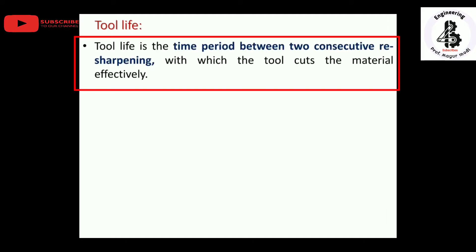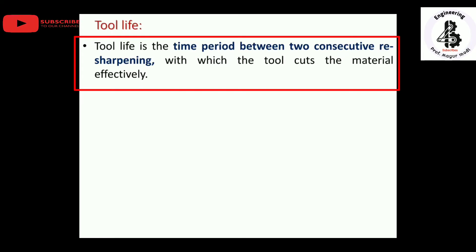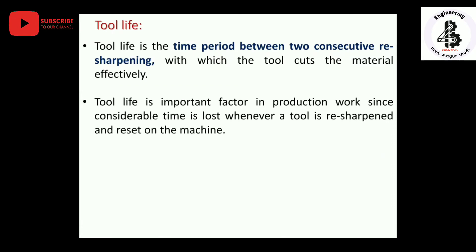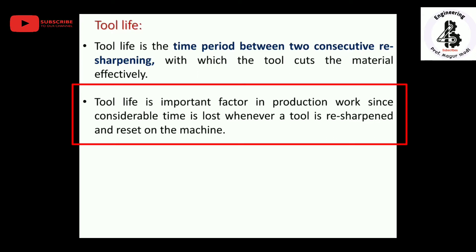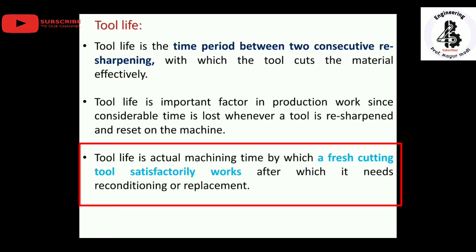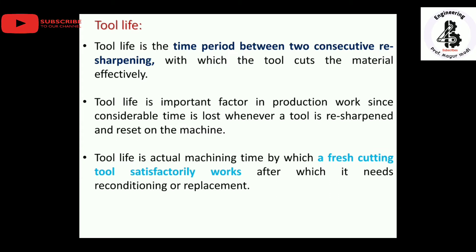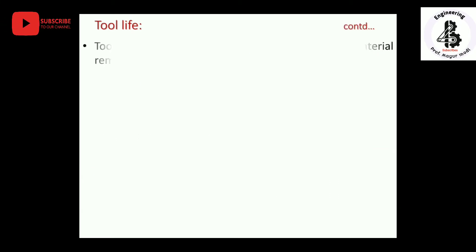Tool life is a time period indicating the interval between two consecutive resharpenings required, during which the tool cuts materials effectively or satisfactorily. It indicates the time for satisfactory work by the tooling materials. Tool life is an important factor in production work since considerable time is lost whenever a tool is resharpened and reset onto the machine. Tool life is the machining time by which a fresh cutting tool works satisfactorily, after which it needs reconditioning or replacement.